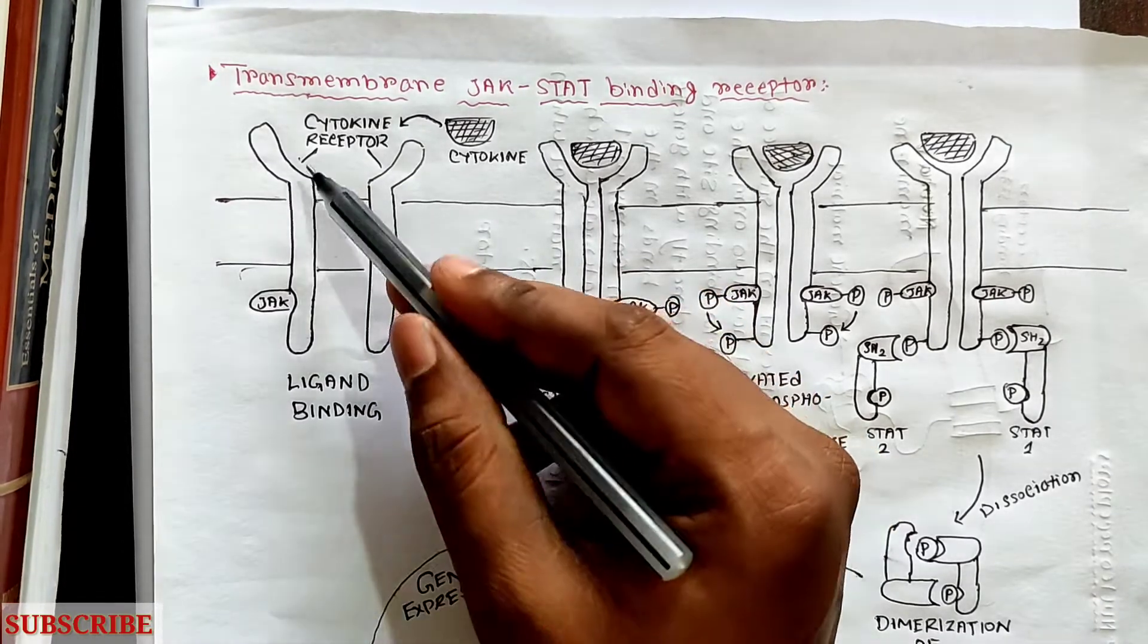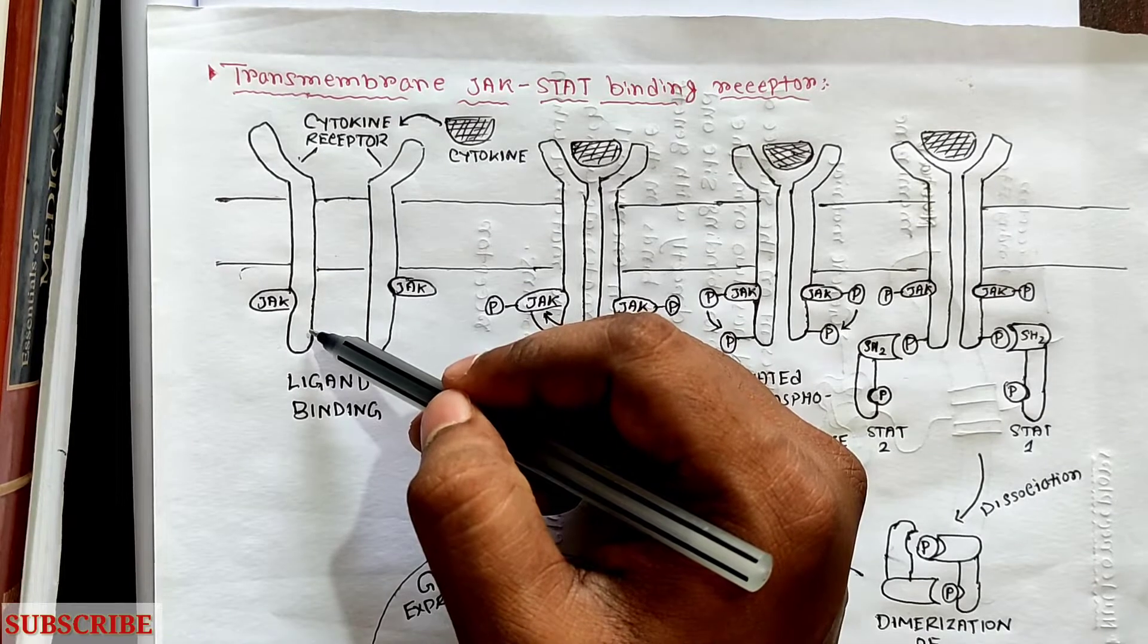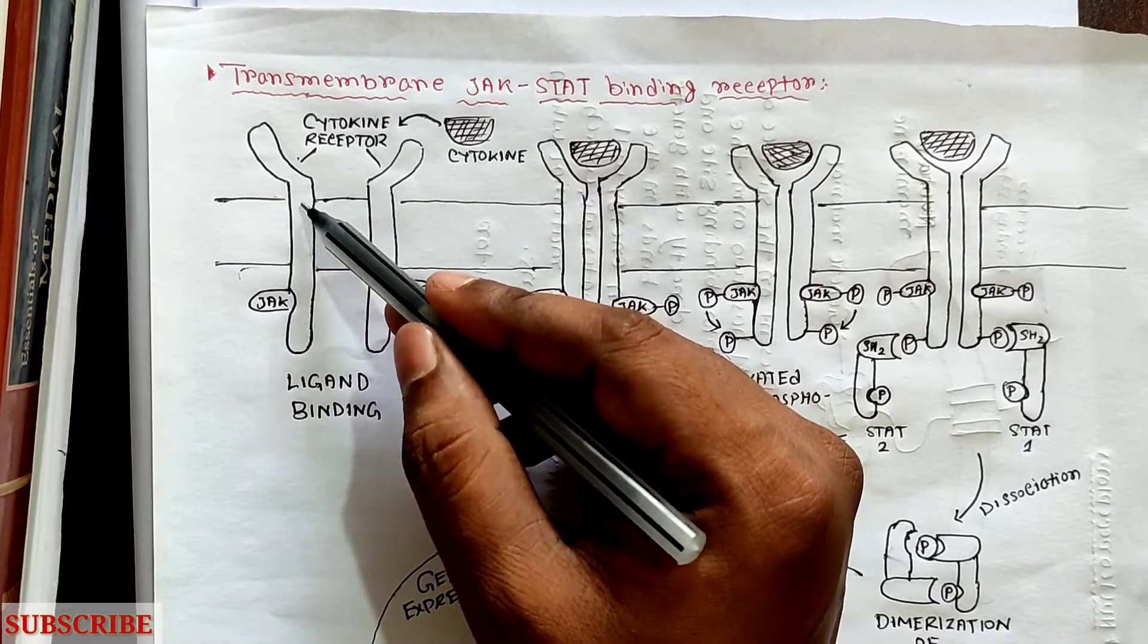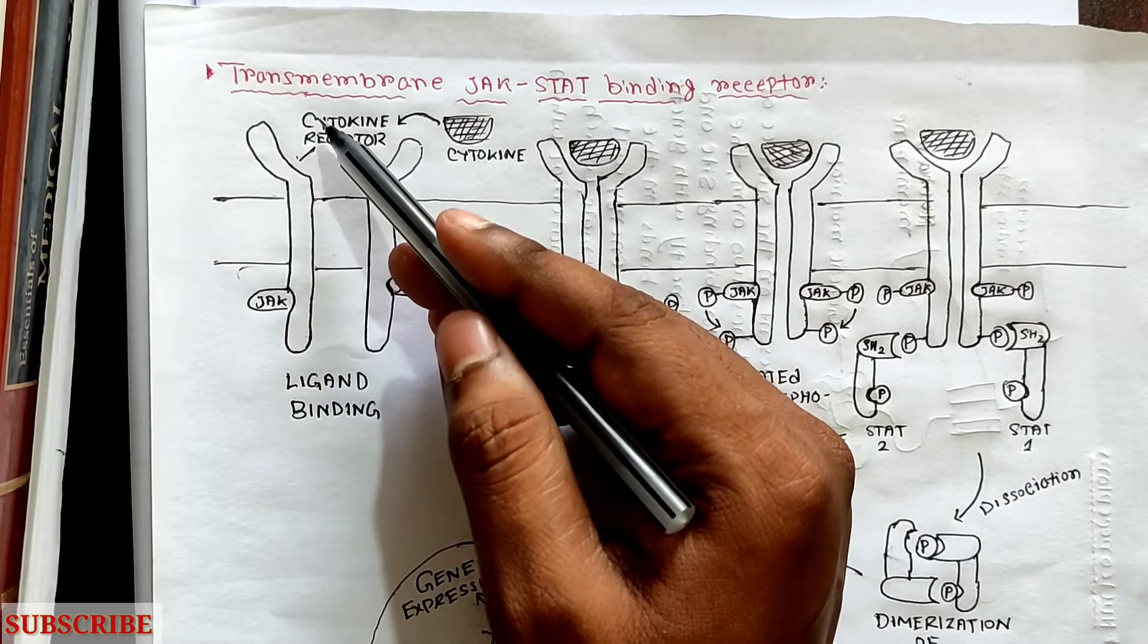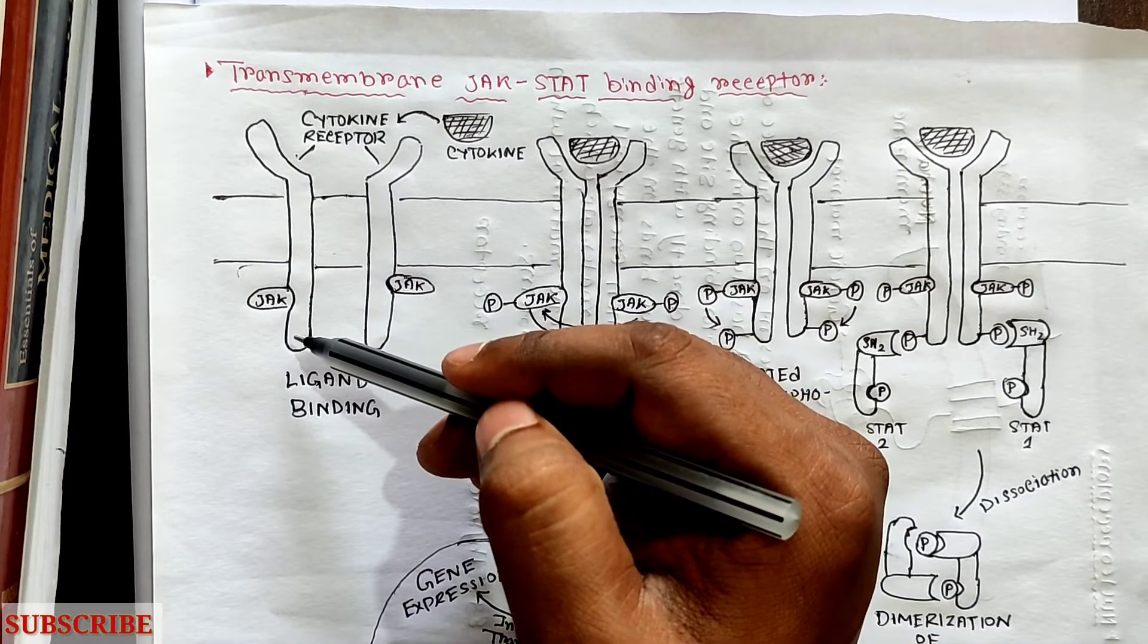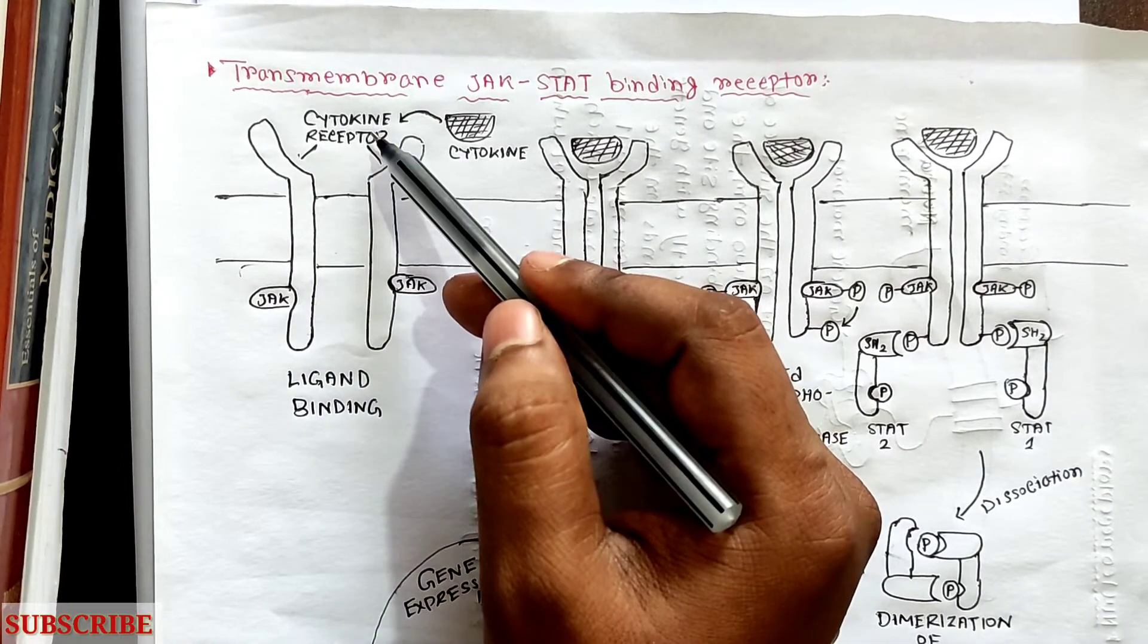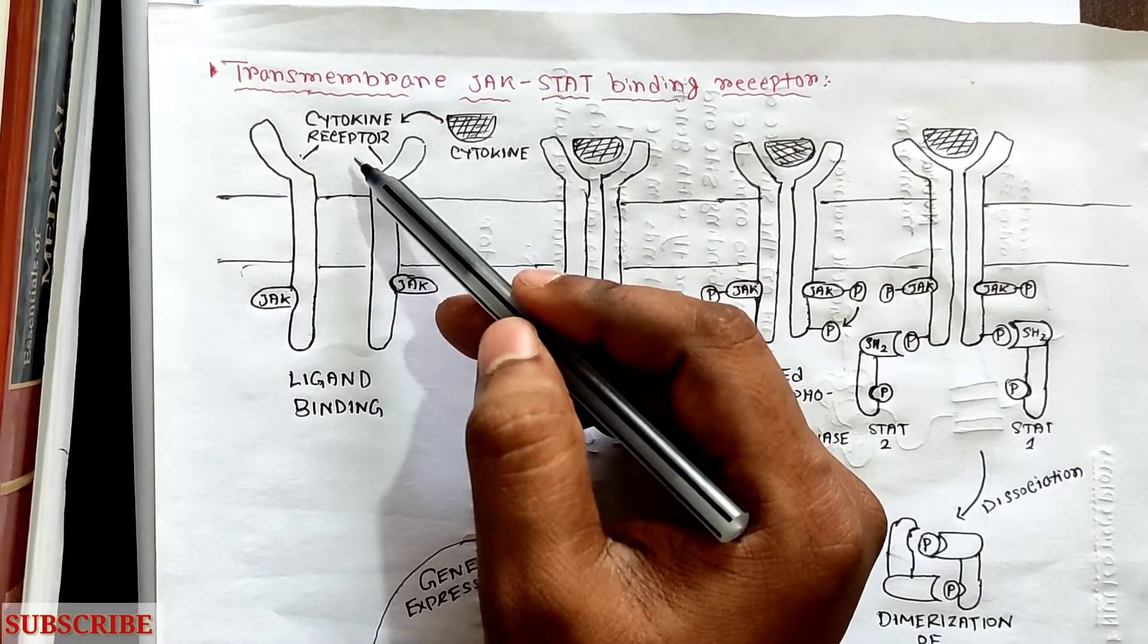There is a presence of receptor, cytokine receptor. Some part of the receptor lies outside of the cell membrane and some part of the receptor lies inside of the cell membrane. The outside part contains cytokine receptor binding site.